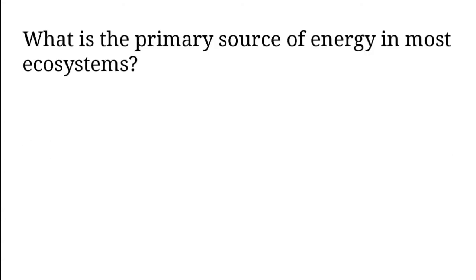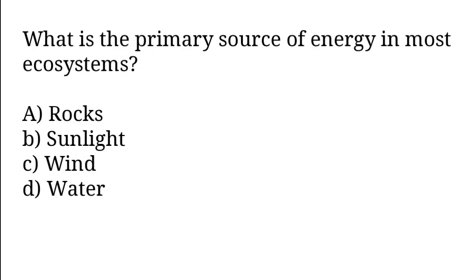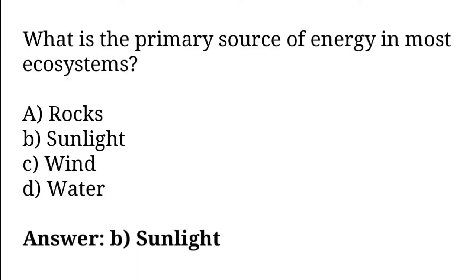What is the primary source of energy in most ecosystems? Options: Rocks, sunlight, wind, water. So the correct answer is option B. Sunlight is the primary source of energy in most ecosystems.